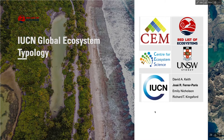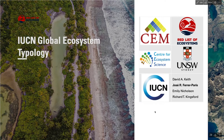The new IUCN Global Ecosystem Typology is a comprehensive classification framework that integrates the functional and compositional features of ecosystems. This new typology will help identify the ecosystems that are most critical for biodiversity conservation, research, management, and human well-being.